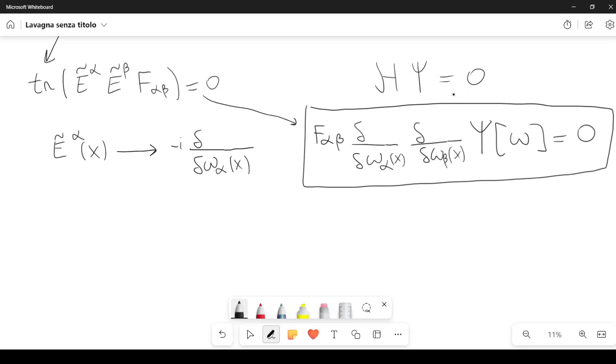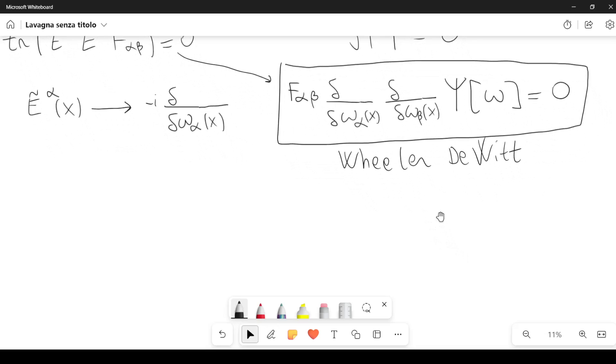It is similar to a Schrodinger equation where we don't have a time derivative here on the right. So this is the Wheeler-DeWitt equation.